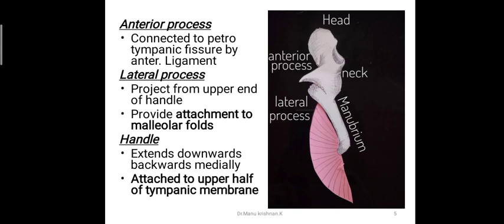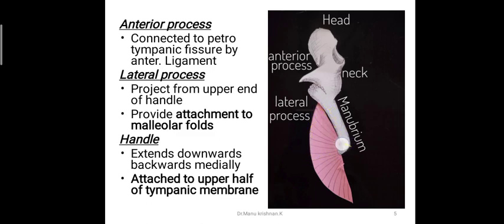The final part is the handle of the malleus, which extends downwards, backwards, and medially, and is attached to the upper half of the tympanic membrane. You can clearly see the handle of the malleus attached to the upper half of the tympanic membrane. The umbo is the point of maximum convexity at the tympanic membrane.